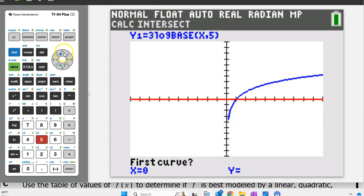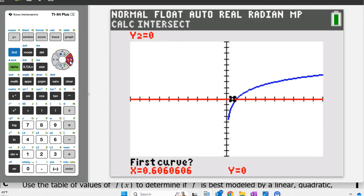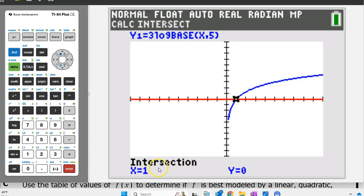I don't see the pointer, so pro tip, hit the up arrow key and, aha, there it is. Slide over close to the point of intersection and hit enter three times. Enter, enter, enter. Okay, the intersection point is x equals 1.